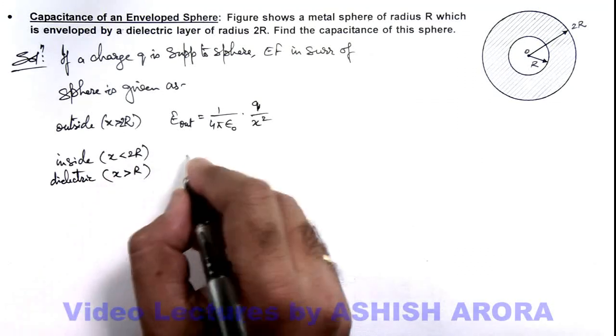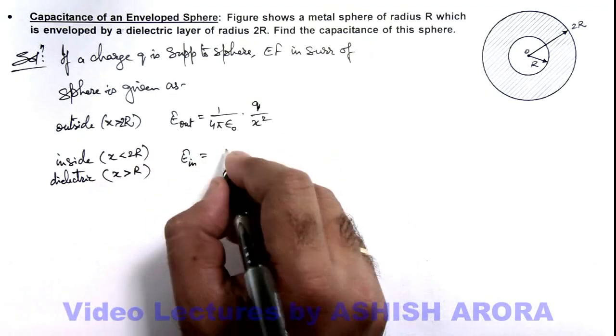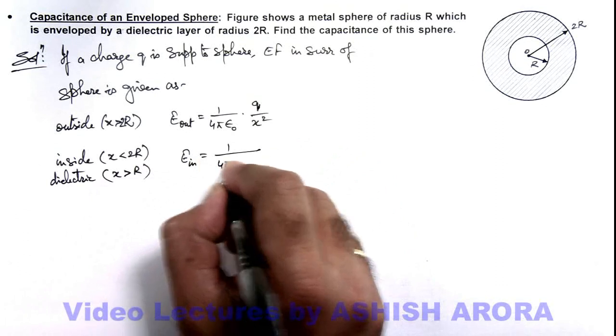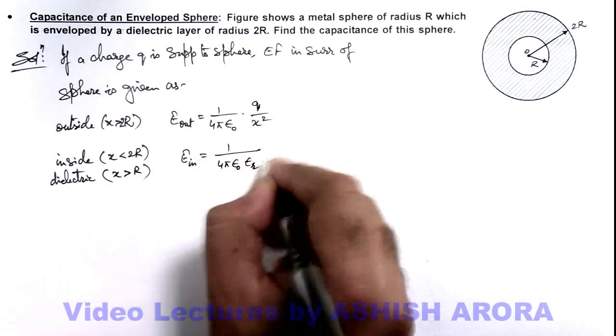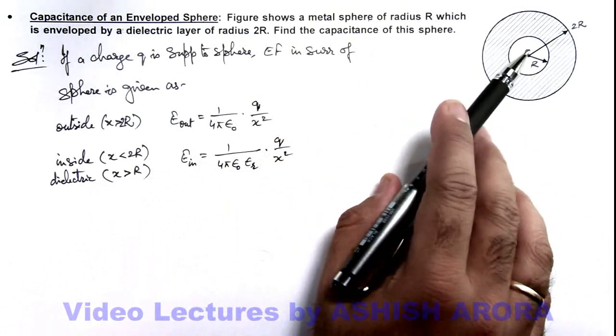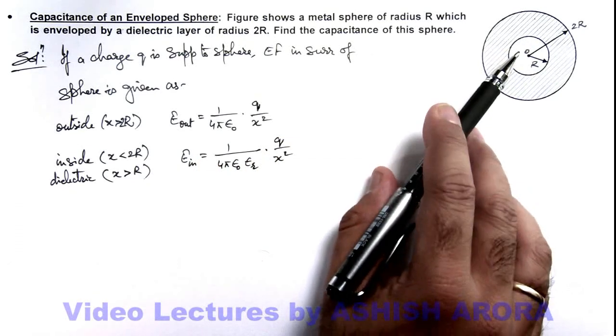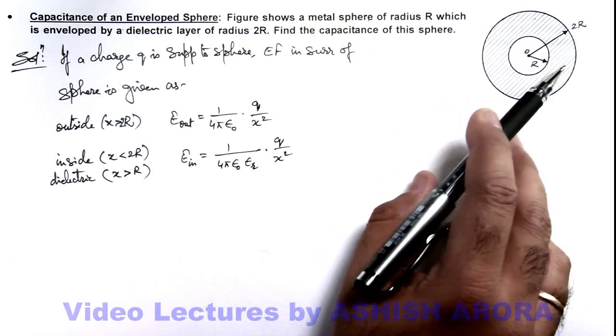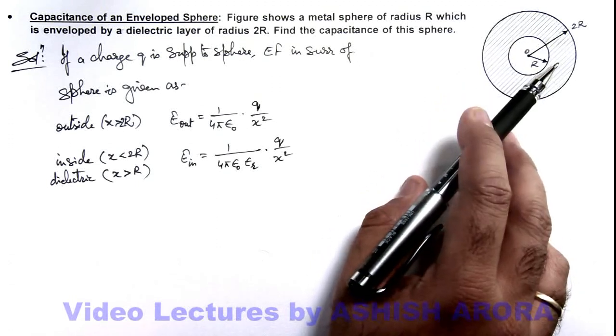So here E inside we can write the value of electric field as 1 by 4π epsilon not epsilon R multiplied by Q by x square. Because the electric lines which will originate from the sphere are normally getting into the dielectric, so electric field will be E by epsilon R.